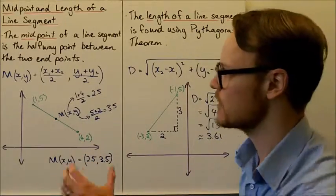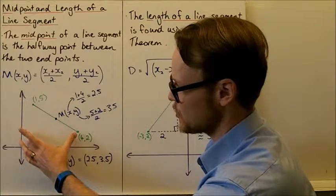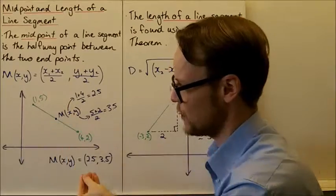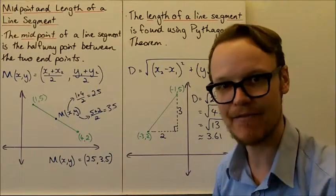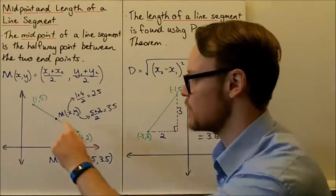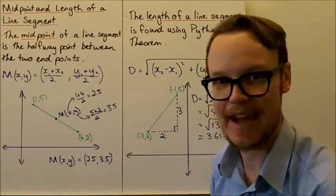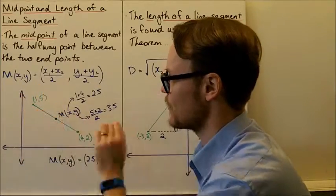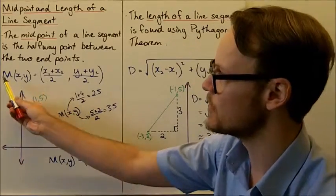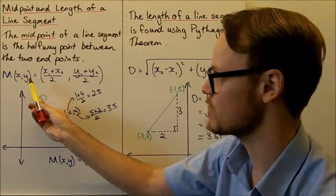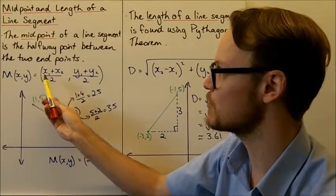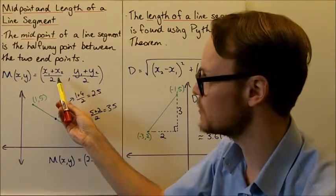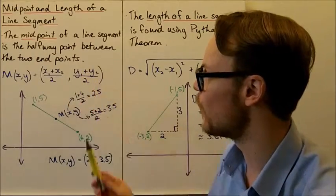The midpoint is going to be halfway in between the x values and also halfway in between the y values of our two points. So what we can do is find the average of the x values — that will give us the x value for our midpoint — and find the average of the y values, which will give us the y value for our midpoint. So the midpoint in coordinates (x, y) is equal to the average of the x coordinates and the average of the y coordinates of our two endpoints.